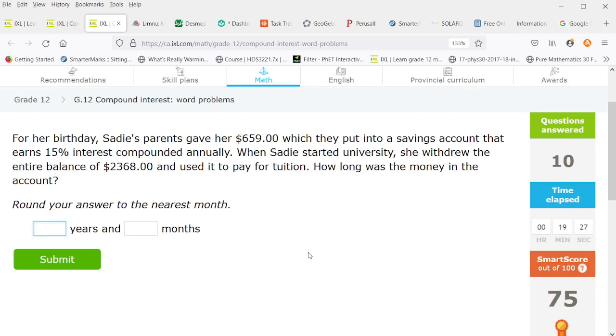So we need to figure out how long Sadie's money was in the account. So again we have log of 2368 divided by 659, divide that by the log of 1.15 because it was annual interest. So we get 9 years and then the decimal part is 0.151829 that we have to multiply by 12 and it'll be 2 months.